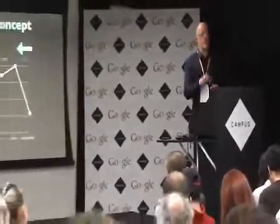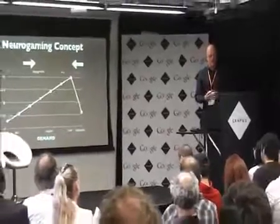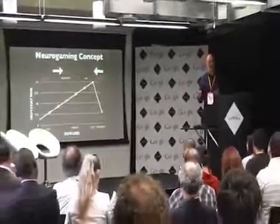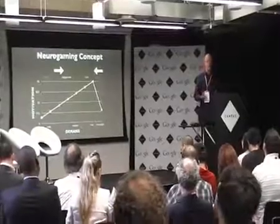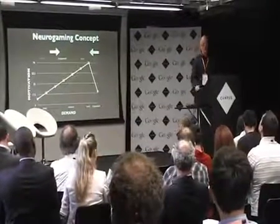We labeled different zones along the motivation curve. When demand is low and motivation is low, the player is bored. We'd like the player to be engaged — ideally in an area we call 'the zone,' just before people give up, where we think people are really enjoying the game the most. We don't want them to be overloaded either. The computer system is trying to manage the state of the gamer by controlling the level of difficulty.